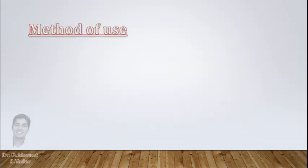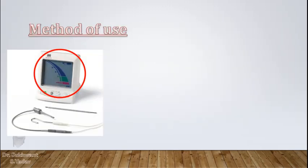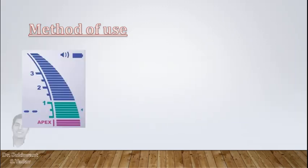So first, coming to method of use. There are bars on screen which are green and red in color. Most of us have this in mind that when the file is in the red zone it is at apex, and reduce 0.5mm from that and that will be the final working length.